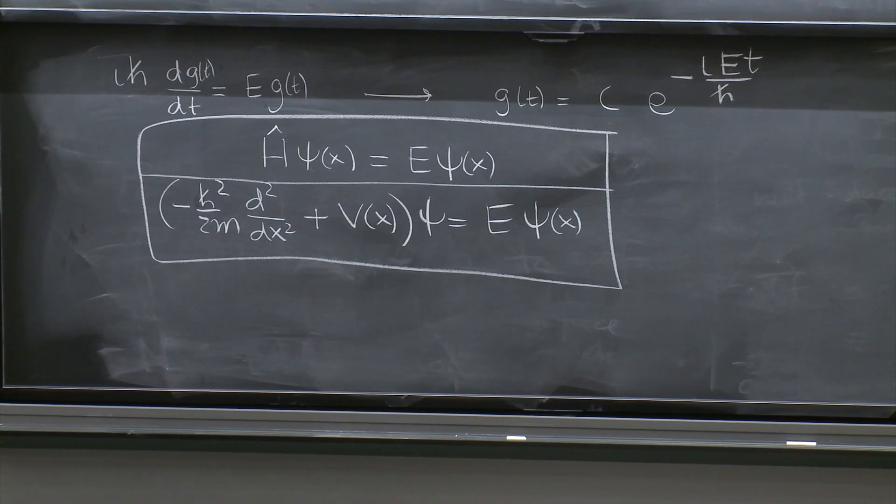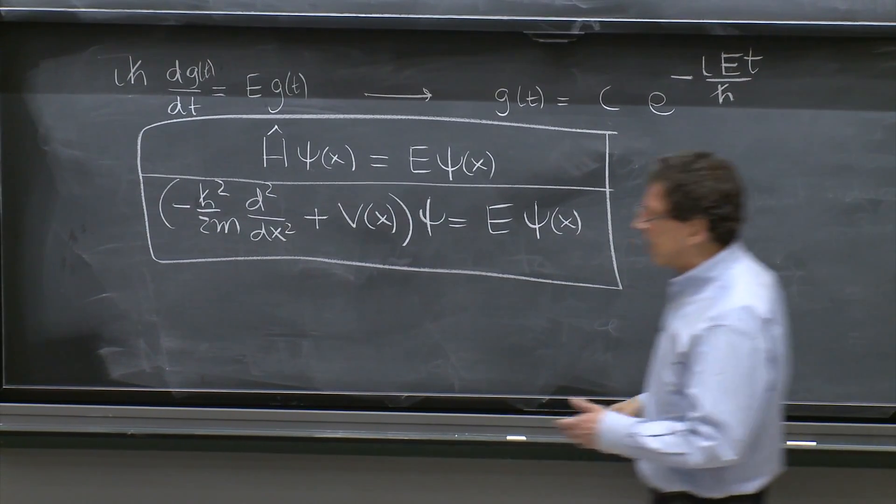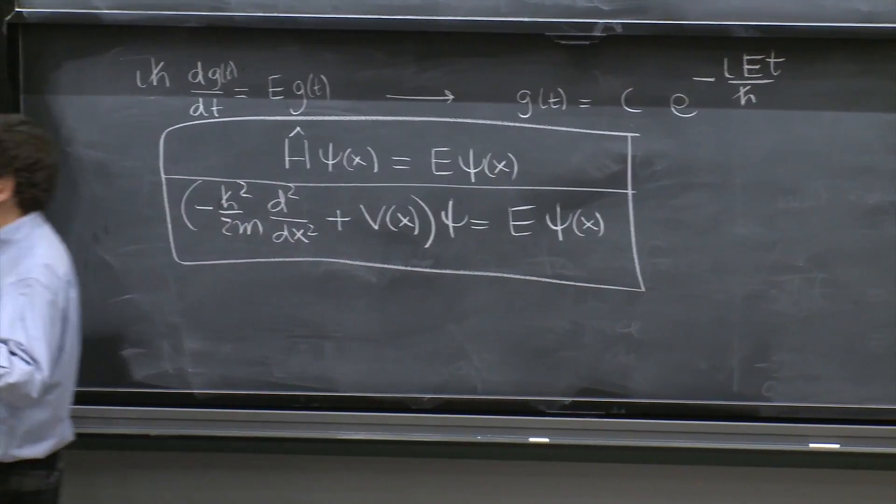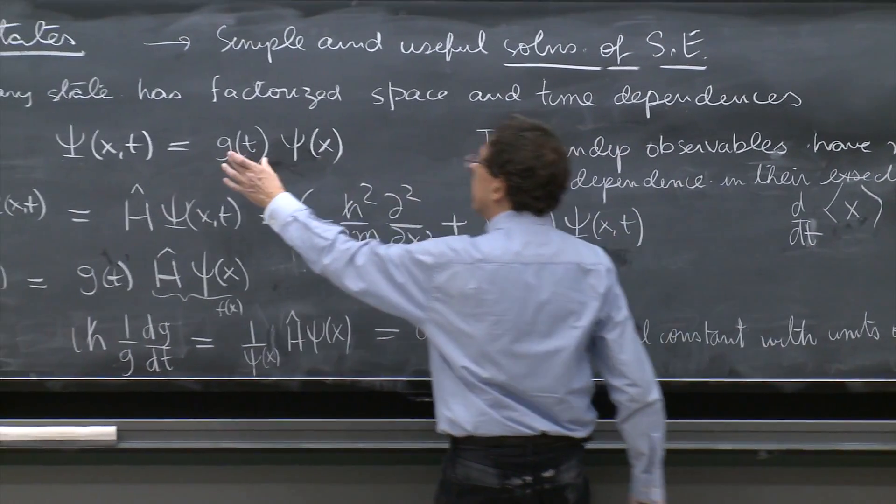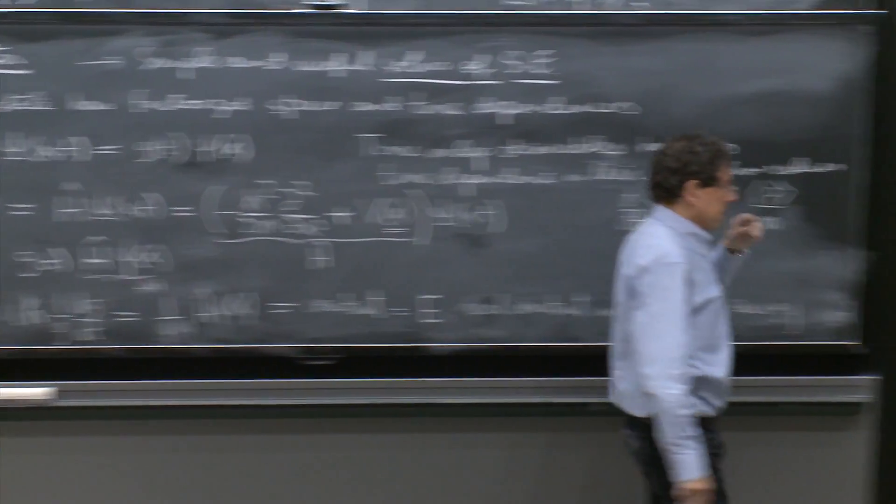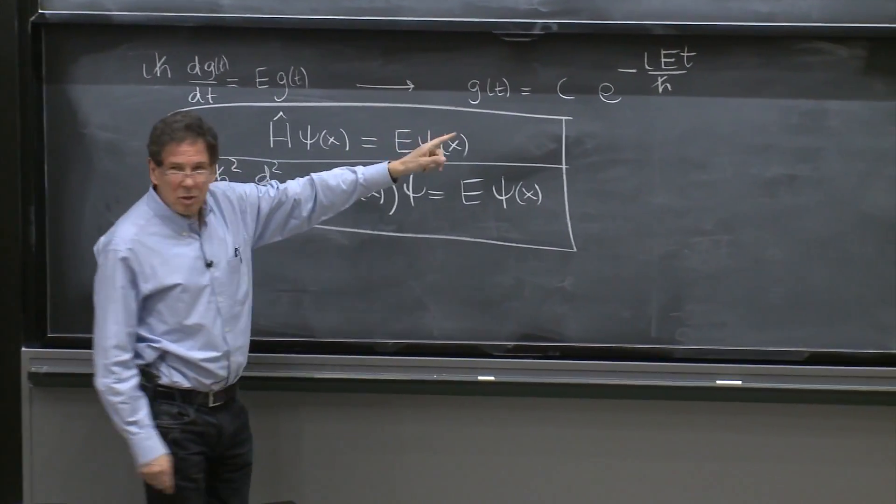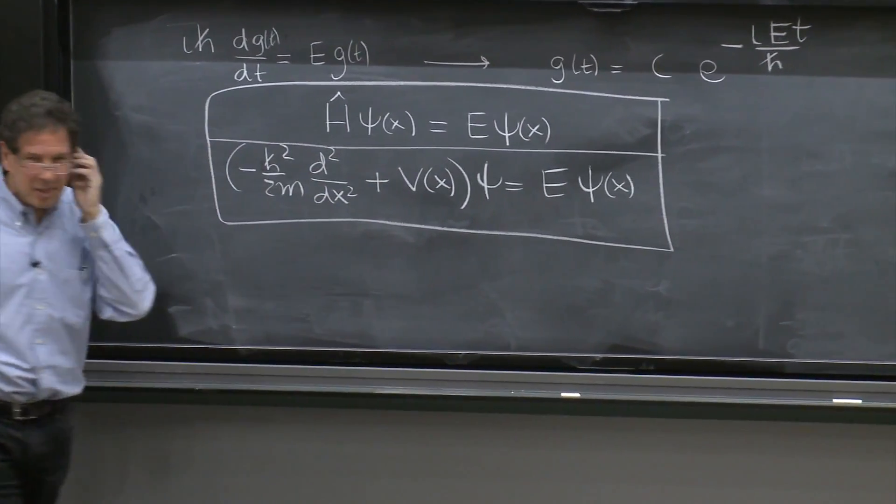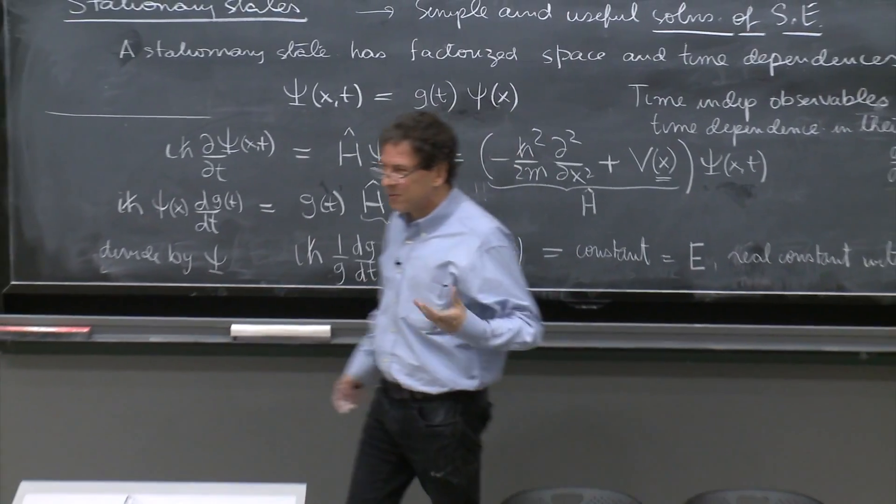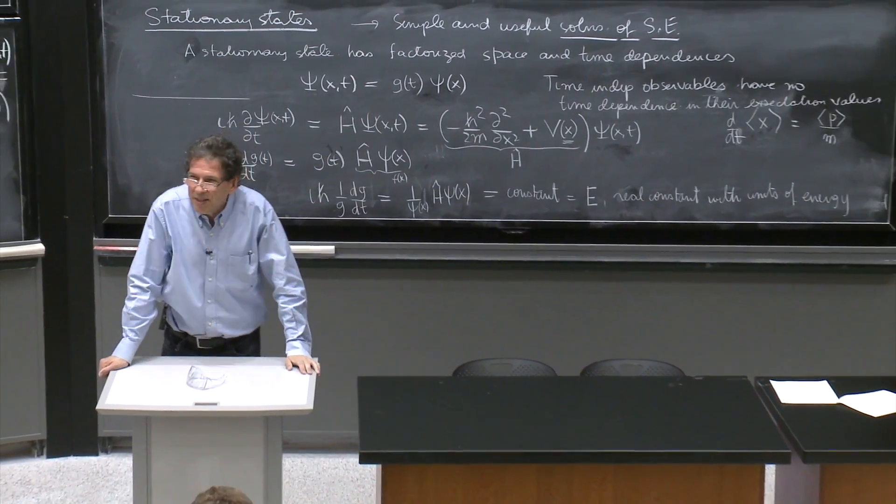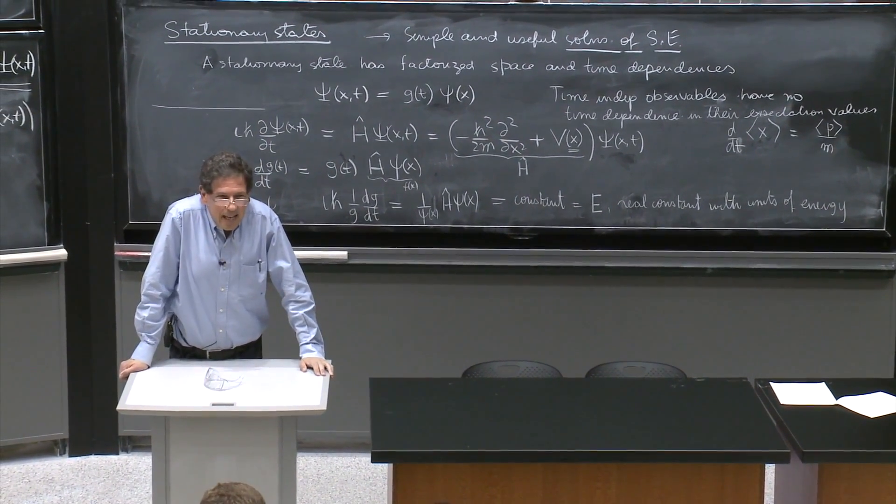And this is part of solving for stationary states. You've solved for g of t. The time dependence was easy to solve for. But the x dependence is complicated in general. There you have to do some work. You have to solve a differential equation. It's not that easy.